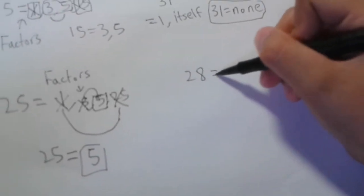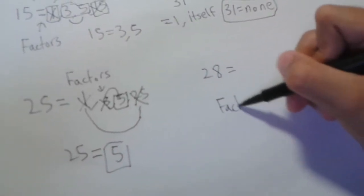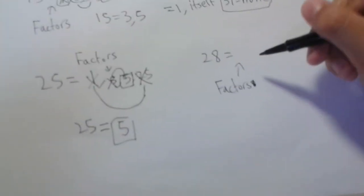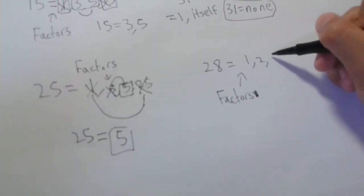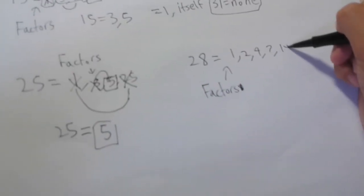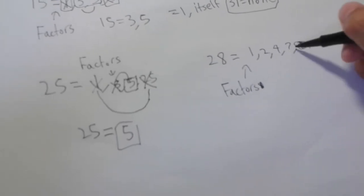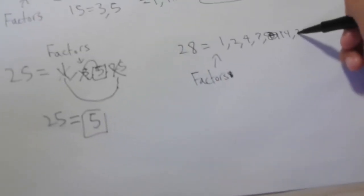Okay, so the last one is 28. 28's factors are 1, 2, 4, 7, and 14, because... oh, that's right, 14 and 28.